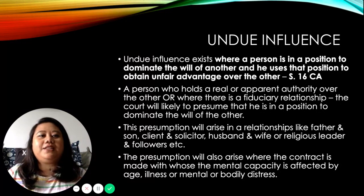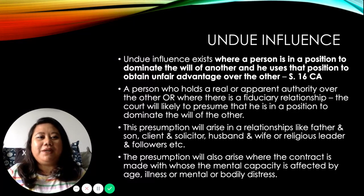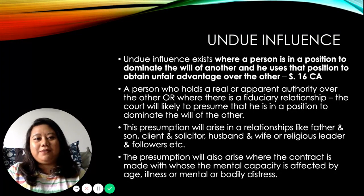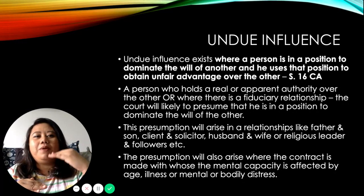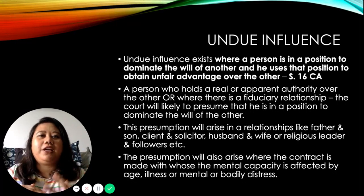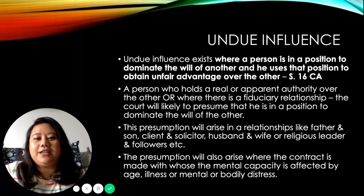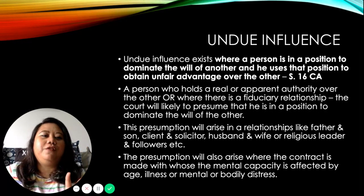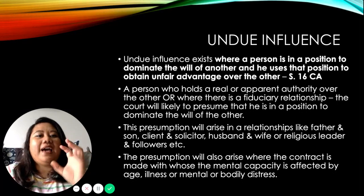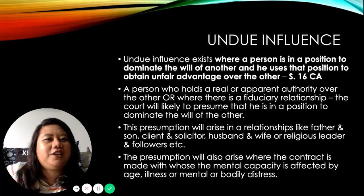The second vitiating factor is undue influence, found under Section 16 of the Contracts Act. Undue influence is where a person is in a position to dominate the will of another and uses that position to obtain an unfair advantage over the other. Both elements must be fulfilled: the dominant position and the unfair advantage obtained because of it.